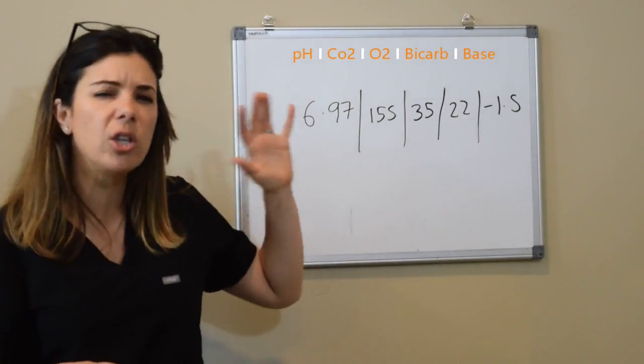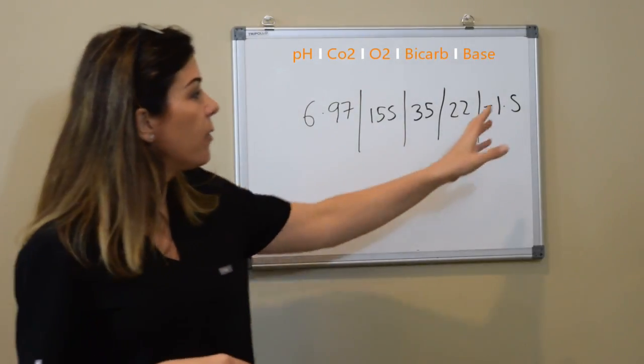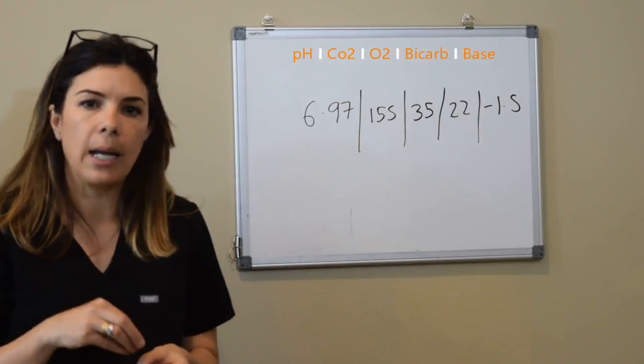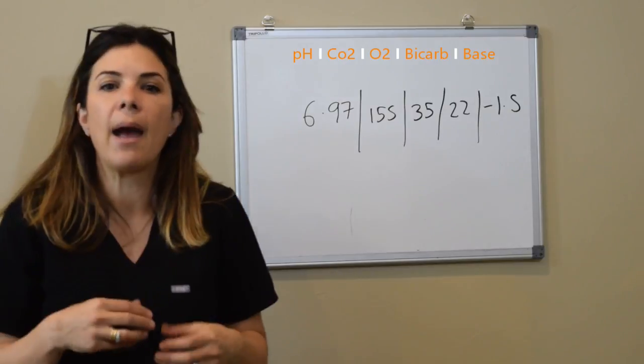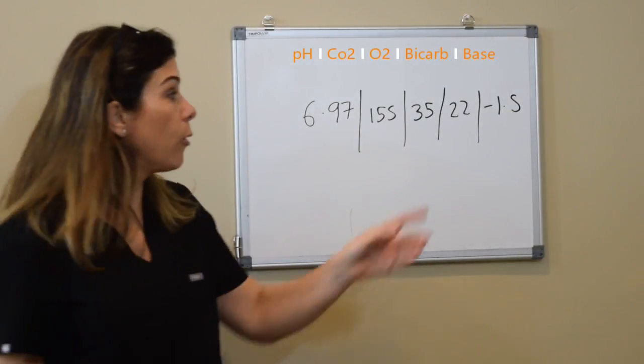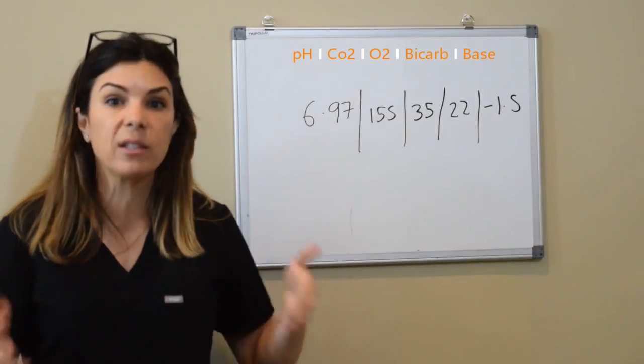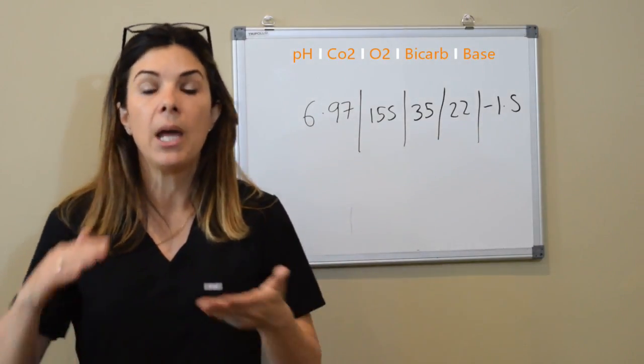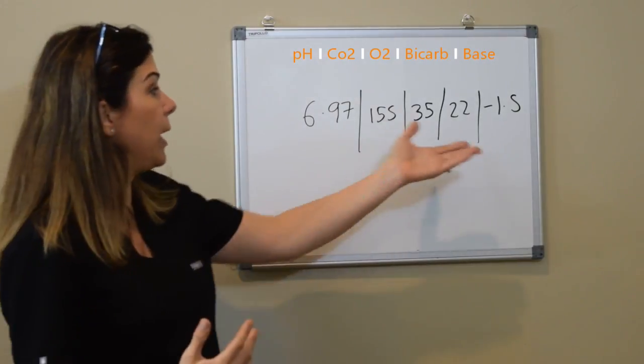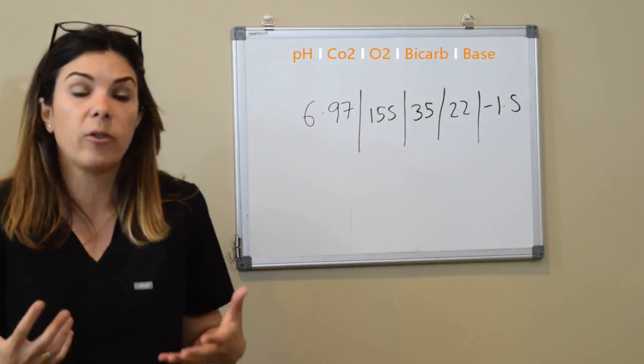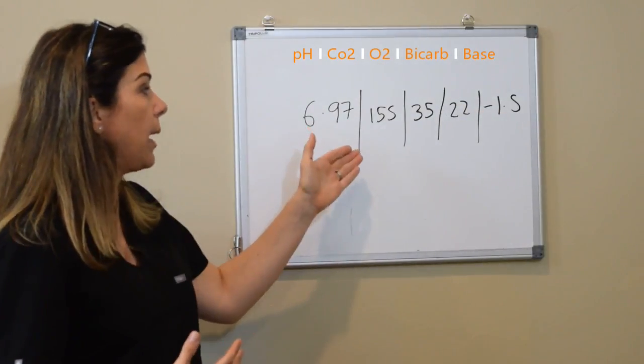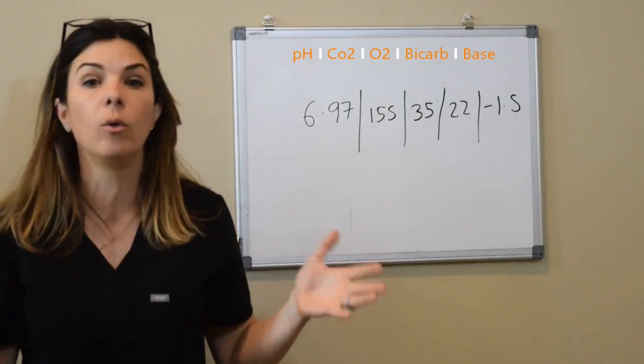So what can we say in this situation? The CO2 is so off, but the bicarb and the base are pretty normal. So most likely what's happened here is that we haven't had enough time for metabolic compensation to happen. The kidneys right now are probably starting to retain their bicarb to try to get some metabolic alkalosis, but maybe this has only been going on for an hour or two. It just hasn't had enough time to compensate, which is why our pH is so horrible.